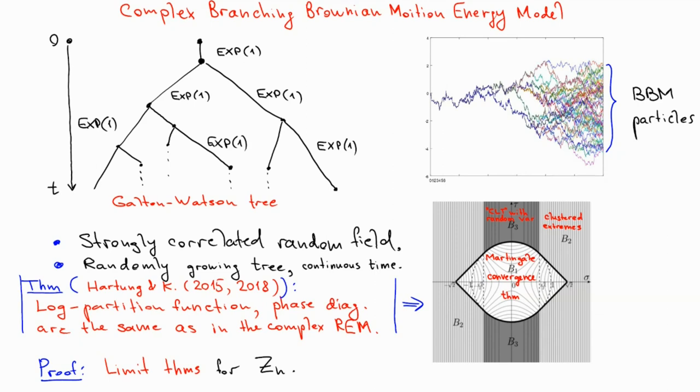To summarize, for complex random energy model, generalized random energy model, and branching Brownian motion, we obtained limit theorems for the partition function. As a consequence, we obtained explicit formulae for the log partition functions. In turn, we identified full phase diagrams and the distributions of zeros of the partition functions. Finally, it would be interesting to derive similar results for models with full replica symmetry breaking, models with microscopic interactions, and possibly establish links with quantum disordered systems.